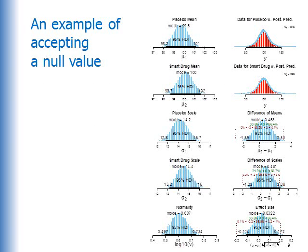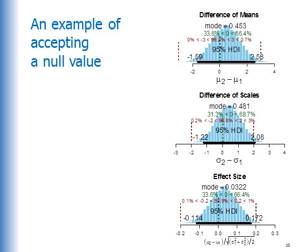Here's an example of accepting a null value. Again, the data are shown in the upper right. Here, there's only a very small difference between the groups. Let's zoom in. In the lower right, here's the effect size. We see that the 95% HDI falls completely within the ROPE, and therefore we would accept the value of 0 for practical purposes.